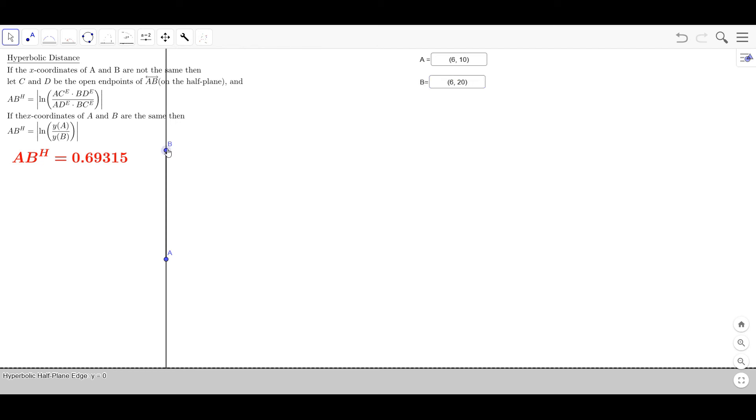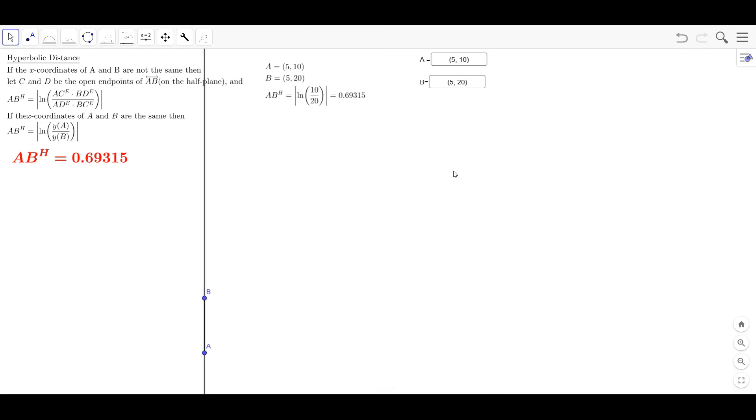And we should see that formula as well. And here I changed the point slightly, 5,10 and 5,20. You can see now the points here and it's this log of the y coordinates, 10 over 20 or 1 half.